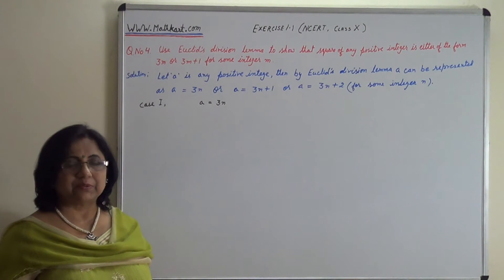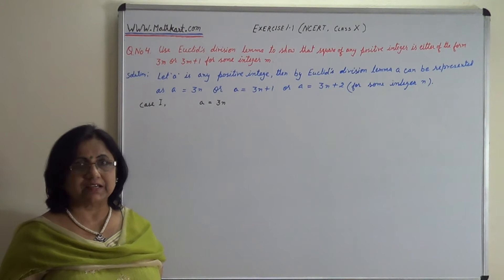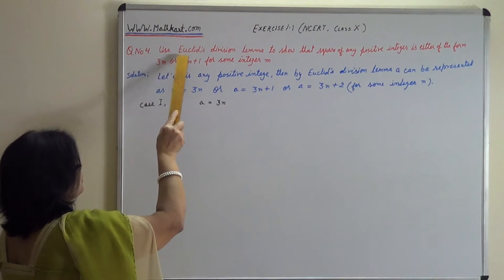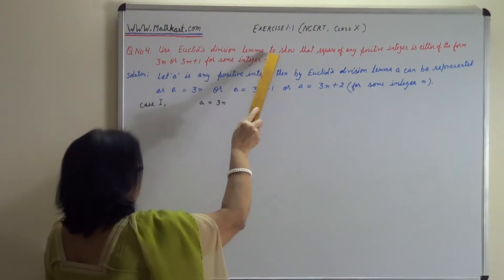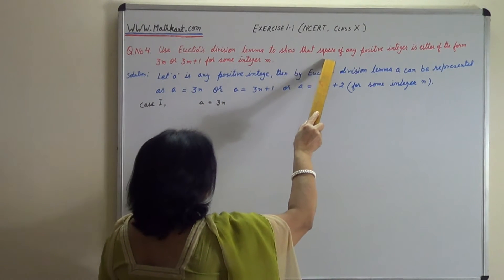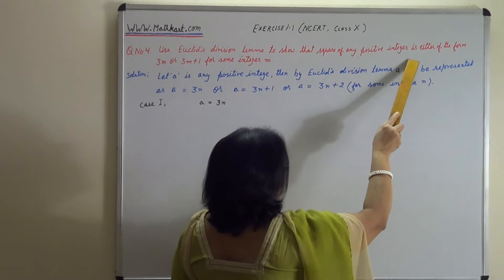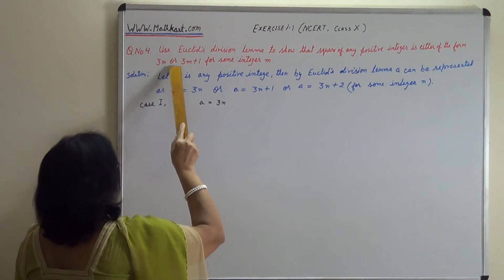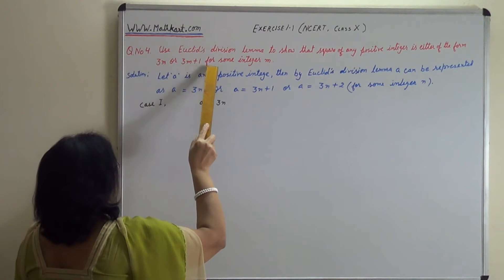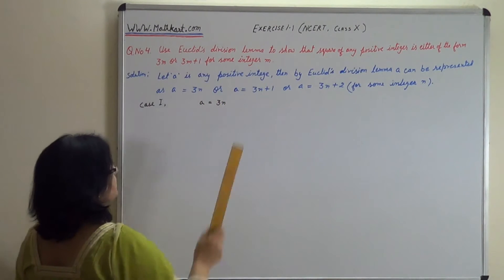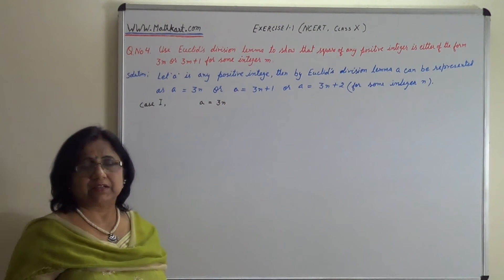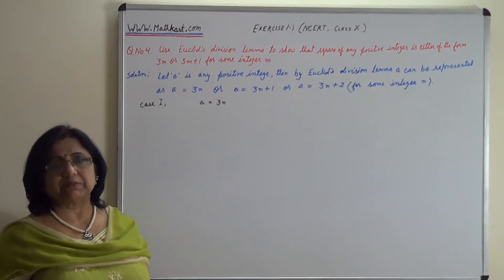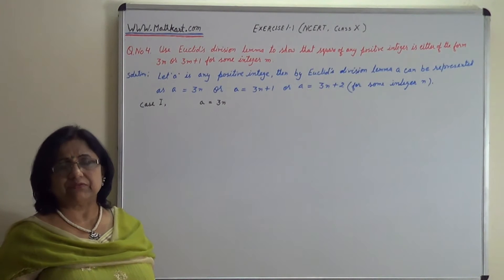Hello students, I am Manjur Sandhra and I will ask you a question. Use Euclid's division lemma to show that the square of any positive integer is either of the form 3m or 3m plus 1 for some integer m. Here we can show that square of any positive integer means 1 to infinity.